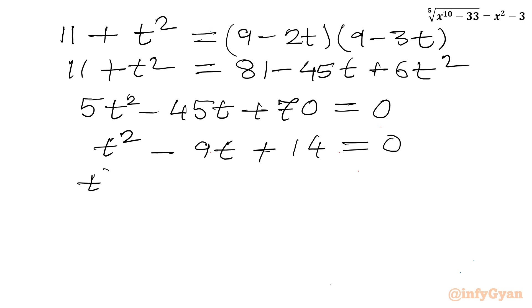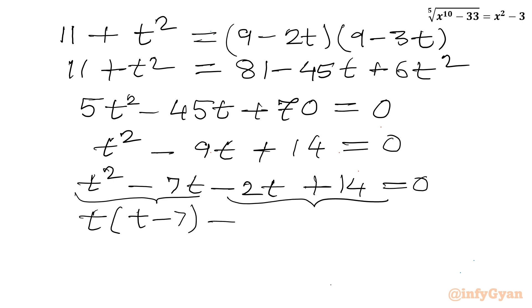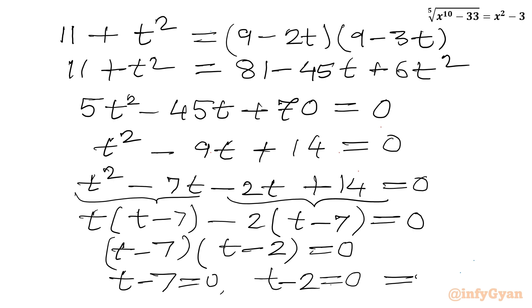Factorizing t squared minus 9t plus 14: we split as t squared minus 7t minus 2t plus 14 equals 0, giving t(t minus 7) minus 2(t minus 7) equals 0, so (t minus 7)(t minus 2) equals 0. Therefore t equals 2 or t equals 7.